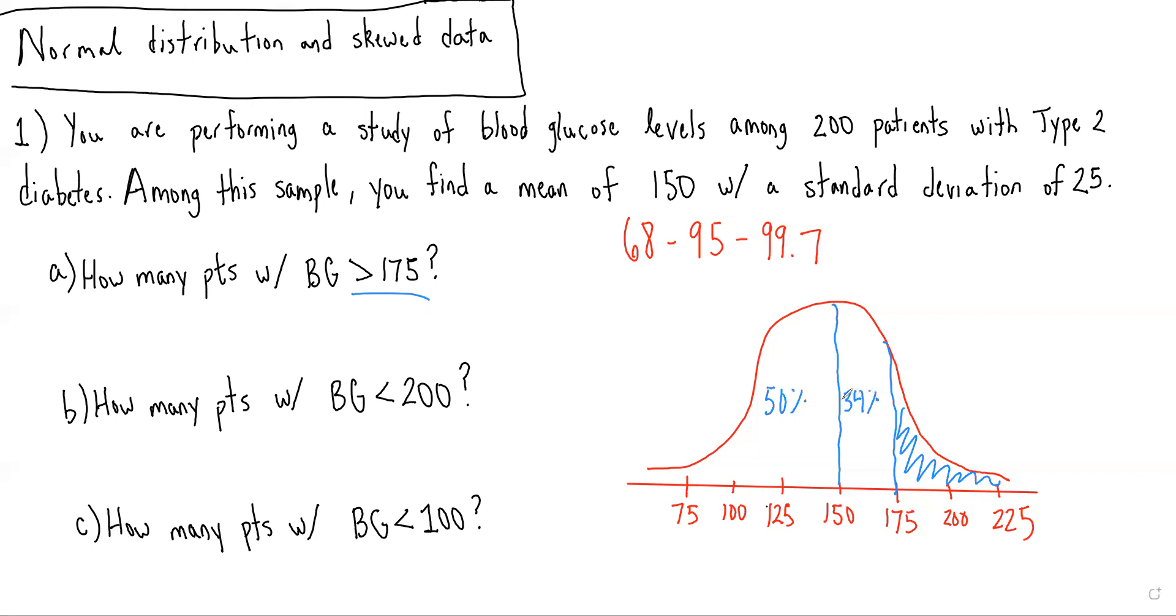And therefore, this will be 16% of our patients. So we would do 200 times 0.16, and we'd get 32 patients.